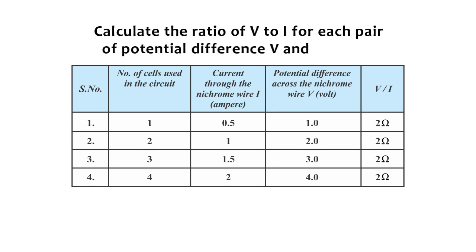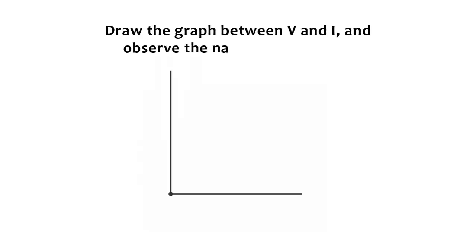Calculate the ratio of V to I for each pair of potential difference V and current I. Plot a graph between V and I and observe the nature of the graph.